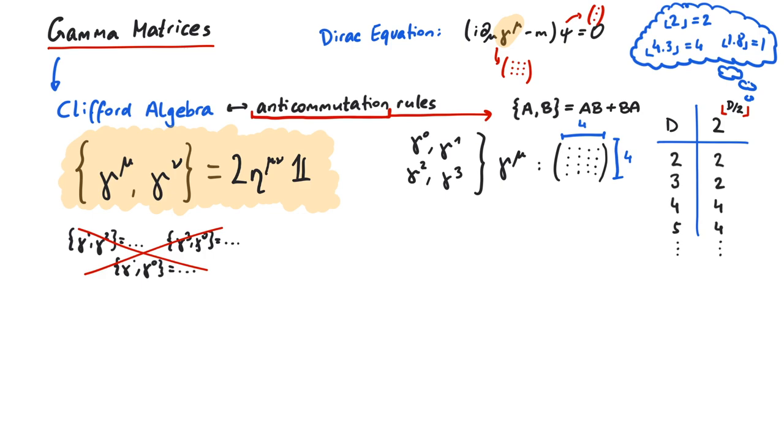Since the metric looks like this, the anticommutator is very often 0, in particular exactly when mu and nu are different. So gamma 0 with gamma 3 is 0, gamma 2 with gamma 1 is 0, and gamma 3 with gamma 3 is 2 times minus 1 times the identity matrix, so minus 2 times the identity matrix.